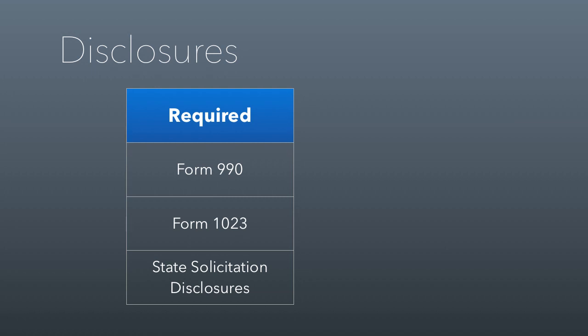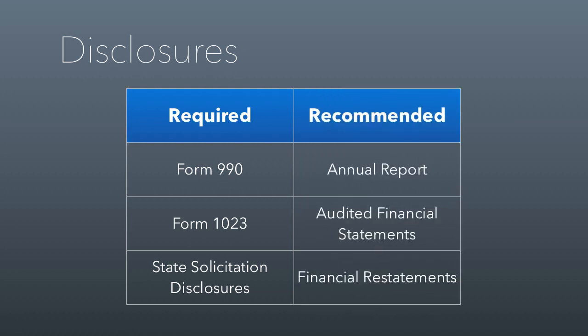This doesn't necessarily mean you stop there when it comes to what nonprofits should be telling the world — there are other things to consider. For example, most nonprofits should do an annual report. You want to do one because it gives you an opportunity to highlight what you've accomplished, but it's also a great opportunity to disclose important things that have happened — big leadership changes, new programs, or new funding obligations.